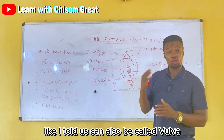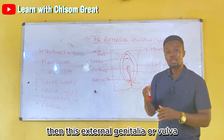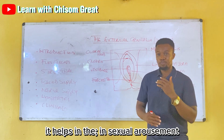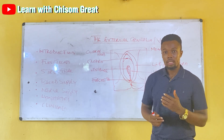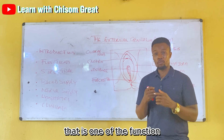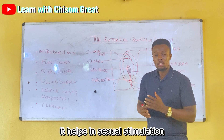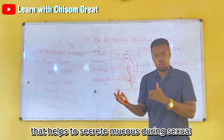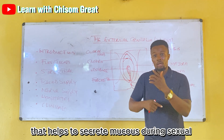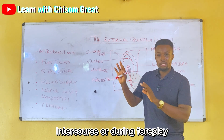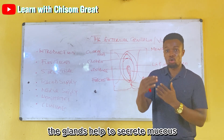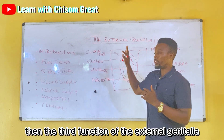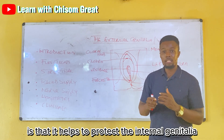The external genitalia can also be called the vulva. It has three functions. The first function is that it aids in sexual arousal — that is, sexual stimulation. The second function is that it contains glands that help to secrete mucus during sexual intercourse or during foreplay.